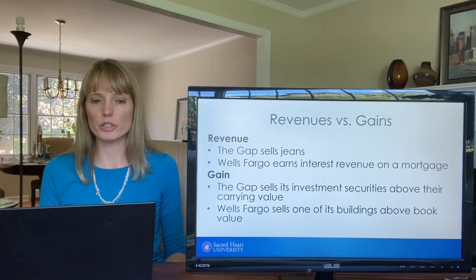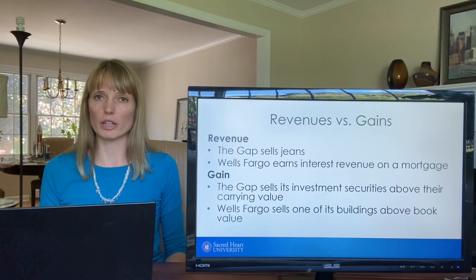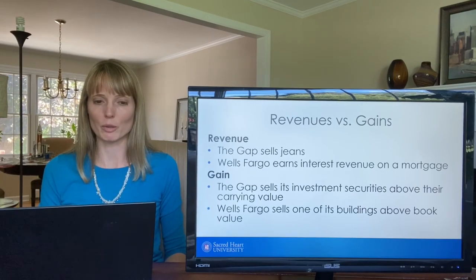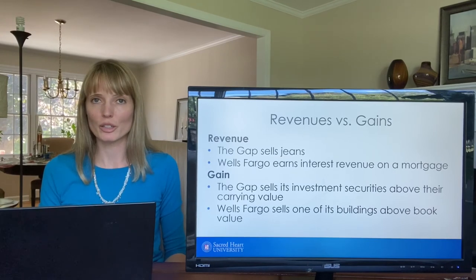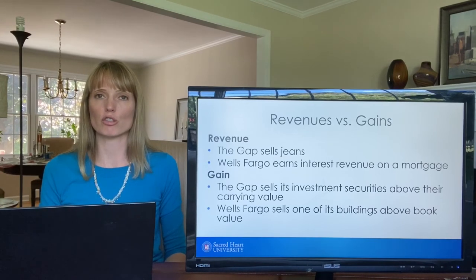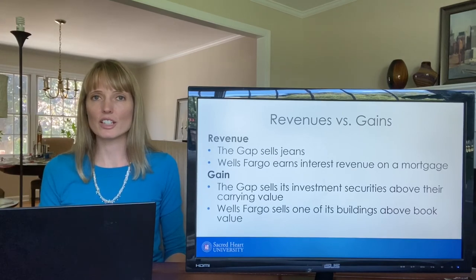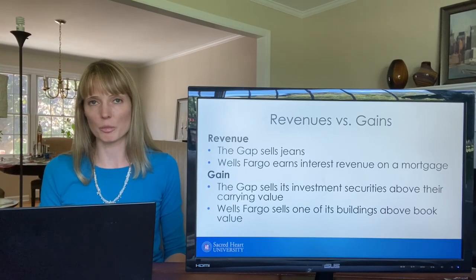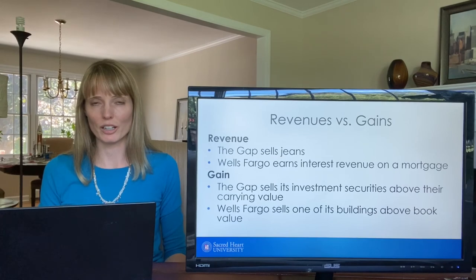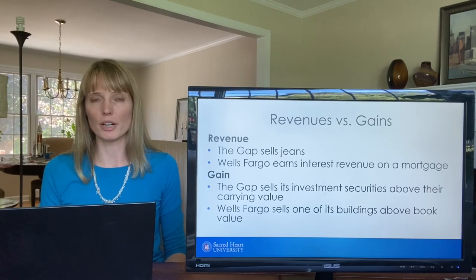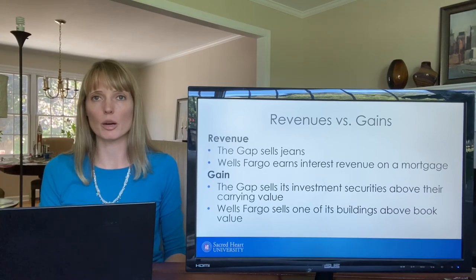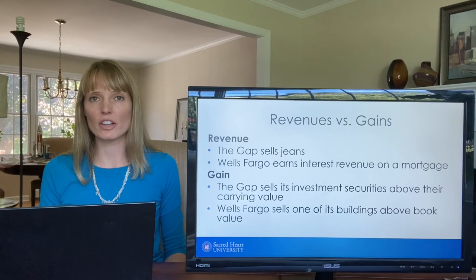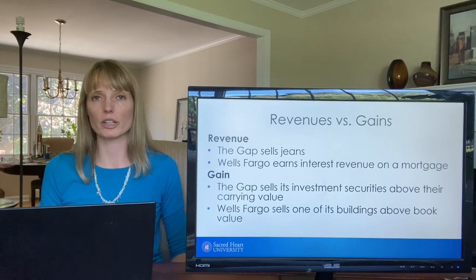Let's talk about the difference between revenues and gains. Revenues are generally when a company does what it's in business of doing — when the Gap sells jeans, or when Wells Fargo earns interest revenue on a mortgage. A gain, by contrast, is typically the result of selling an asset (not inventory) above its book value. For example, when Wells Fargo sells one of its buildings and receives more cash than that building's book value, that results in a gain.